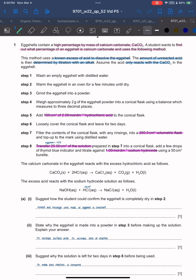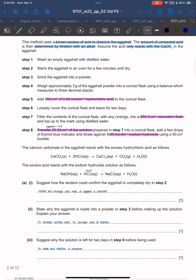Step 7: Filter the contents of the conical flask with any rinsings into a 250 cm³ volumetric flask and top up to the mark using distilled water. Step 8: Transfer 25 cm³ of solution prepared in step 7 into a conical flask, add a few drops of thymol blue indicator, and titrate against 1.00 mol/dm³ NaOH using a 50 cm³ burette.